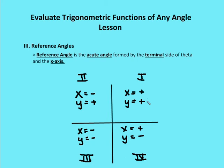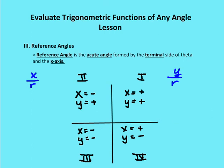When thinking about what the values of sine are in different quadrants: sine is y over r, and since r is always positive, sine is positive in the first and second quadrants because y is positive there. For cosine — x over r — x is positive in the first and fourth quadrants but negative in the second and third. Tangent is positive when x and y are both positive or both negative. Keep that in mind as we continue to use the unit circle and reference angles to find any particular angle.